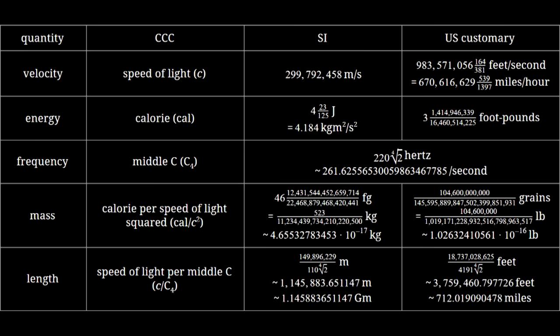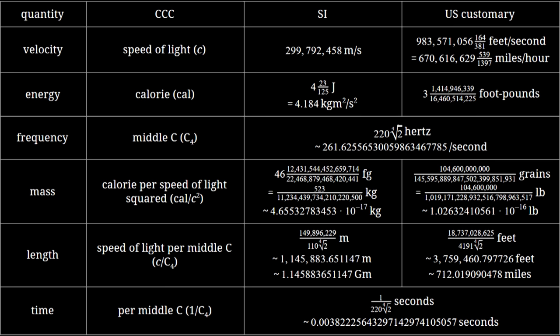So with our units of velocity, energy, and frequency, we have now generated units of length and mass, which means the CCC system is now just as capable as the MKS, CGS, and FPS systems. Well, almost. We do still need a unit of time, but time is just the inverse of frequency. Our unit of time is the per middle C, which is like, what, 0.004 seconds?